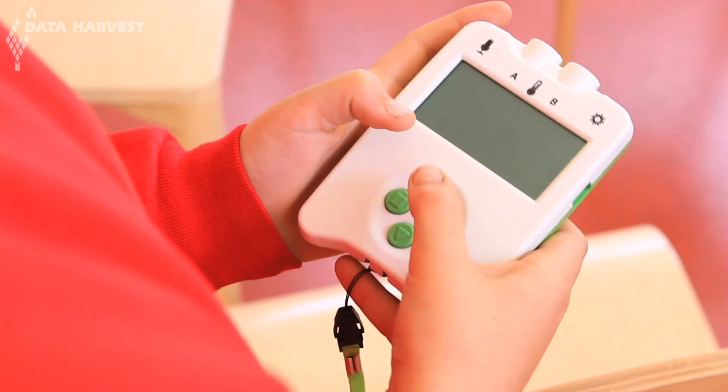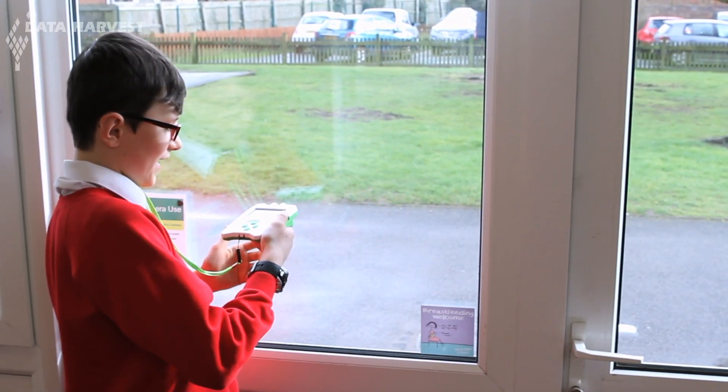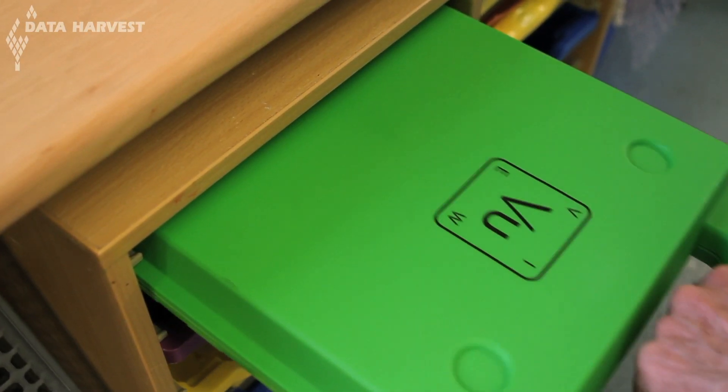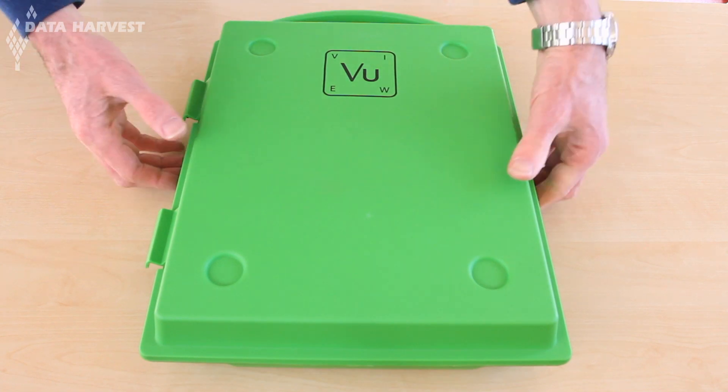Collecting data couldn't be easier than when using the EasySense View data logger. It comes ready to go, straight out of the Gratnell smart case.